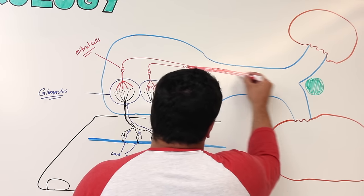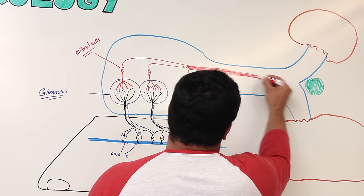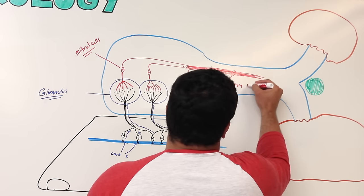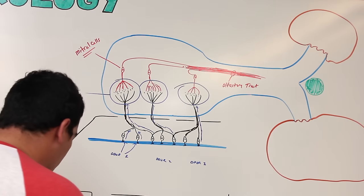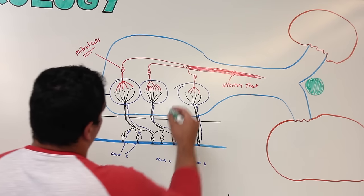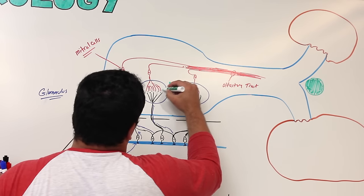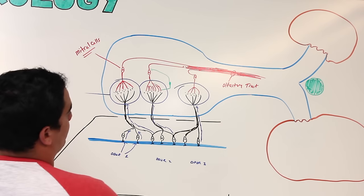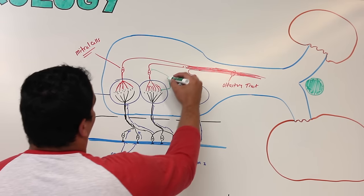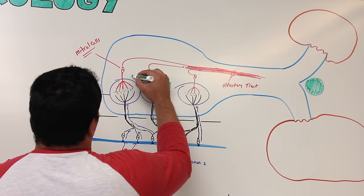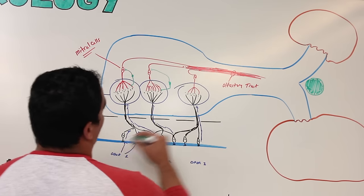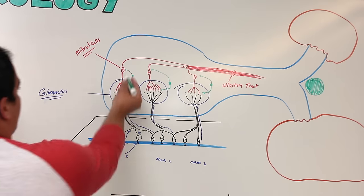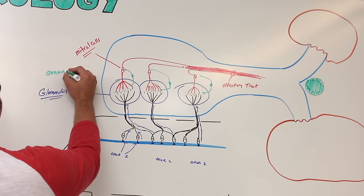All of these mitral cell fibers moving together in this area form the olfactory tract. There is one other cell I want to mention in this vicinity — another cell having extensions connecting to the dendritic extensions of the mitral cells. These cells are called granule cells, or amacrine-like granule cells.